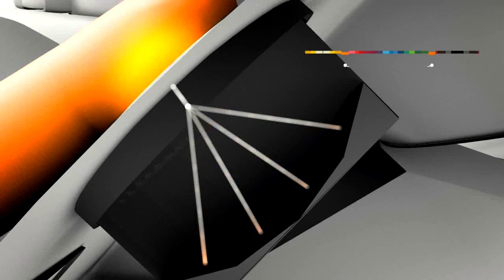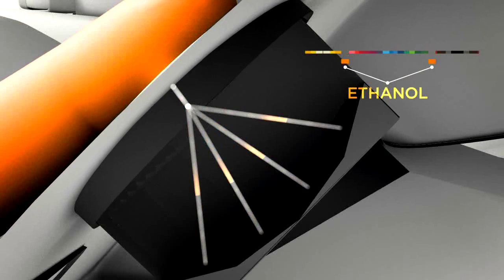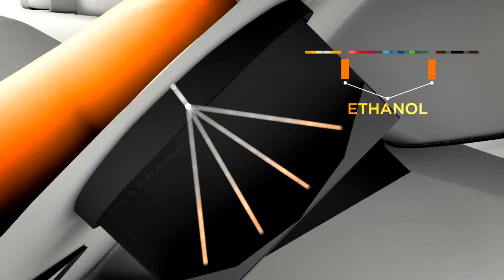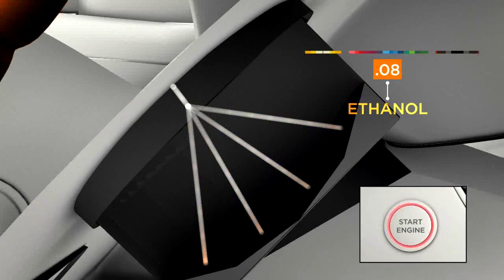Alcohol absorbs specific wavelengths of light. By measuring the light's intensity, the system can precisely pinpoint the driver's blood alcohol level.